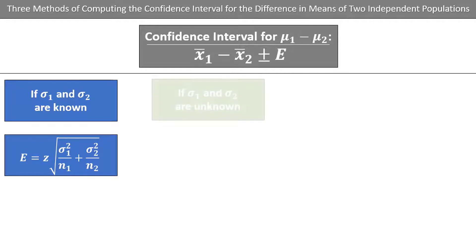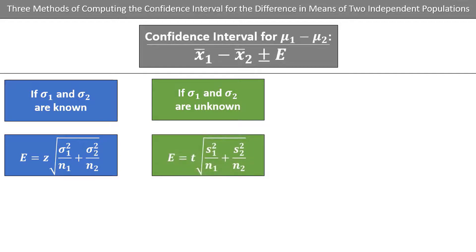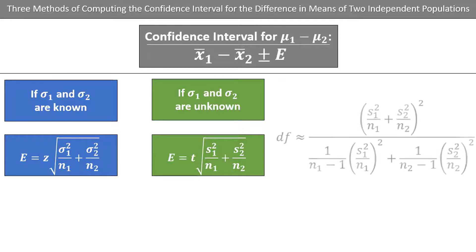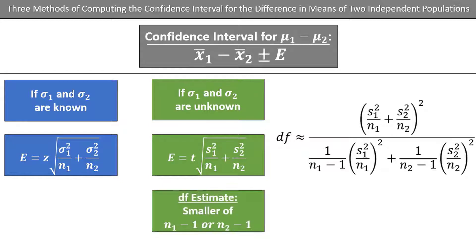If the population standard deviations are unknown, the error is the same except where we use a t-score instead of a z-score and s instead of sigma. The t-score corresponds to the level of confidence and degrees of freedom. The degrees of freedom technically should be calculated using a complex formula, but using the smaller of n1 minus 1 or n2 minus 1 is a conservative approximation.